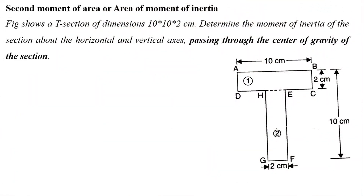We are going to discuss the second moment of area, or area moment of inertia. We will calculate the moment of inertia of a given section. A figure shows a T-section of dimensions 10×10×2 cm. Determine the moment of inertia of the section about the horizontal axis (XX axis) and the vertical axis (YY axis) passing through the center of gravity of the section.